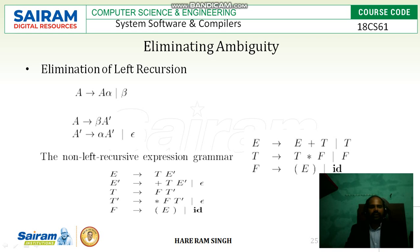For this context-free grammar, we should write A derives beta A-dash. Here beta is a terminal. Then A derives beta A-dash. Then A-dash derives alpha, where alpha is associated with A in the original production. So A-dash derives alpha A-dash or epsilon.